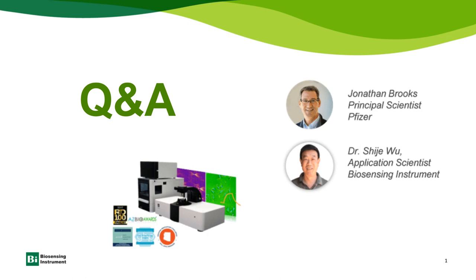Next question: how do you capture suspension cells on the chip? One of the advantages of SPRM is that you don't have to extract membrane proteins from the cell. For suspension cells, you can capture them using functional coatings on the gold surface, including PLL and PDL. Jonathan was actually the first to pioneer working with SPRM using suspension cells, and he may want to add more.